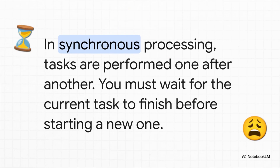So what's the actual culprit here? It's something called a synchronous process. Think of it like a single file line — you have to wait for every single person in front of you to order, pay, and get their stuff before you can even begin to place your order. In the world of apps, it means one task has to finish completely before anything else can happen. It's a total roadblock.